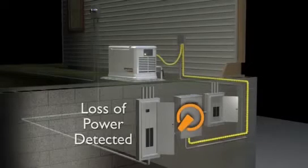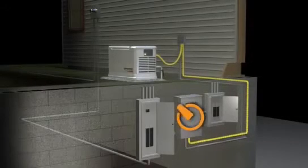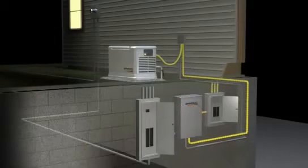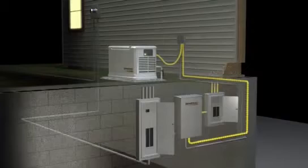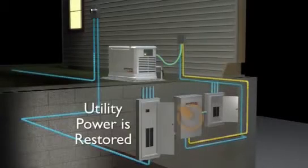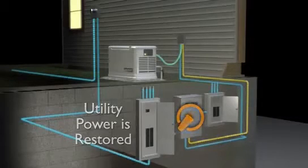The automatic transfer switch safely disconnects the utility line and simultaneously connects a new power line from the generator. Power is restored within seconds. When the utility power is restored, the generator returns to standby mode.